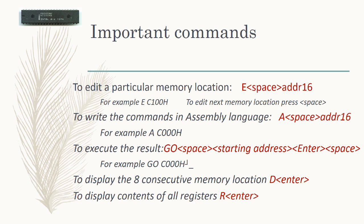To write a program in assembly language, the command is A space followed by the 16-bit starting address. For example, to write the assembly language program starting from location C000H, the command is A C000H. When you type this command, the C000H memory location will be displayed and you can type the instructions in assembly language, continuing until the entire program is entered.